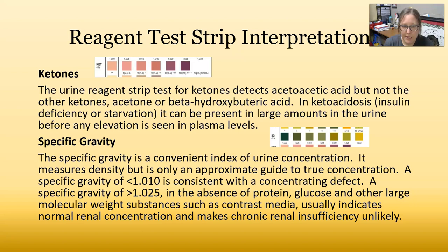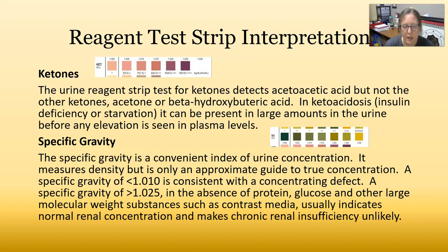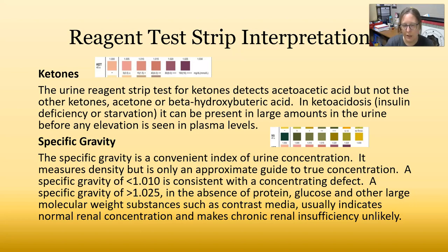Specific gravity is a convenient index of urine concentration — it measures density, but is only an approximate guide to true concentration. A specific gravity of less than 1.010 is associated with a concentrating defect, meaning the urine is too dilute. A specific gravity of more than 1.025, in the absence of protein, glucose, and other large molecular weight substances such as contrast media, usually indicates normal renal concentration and makes chronic renal insufficiency unlikely. It is also a measure of hydration — a well-hydrated patient may have a lower specific gravity.